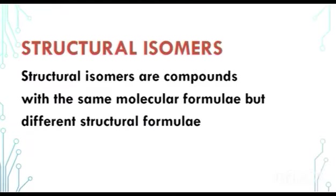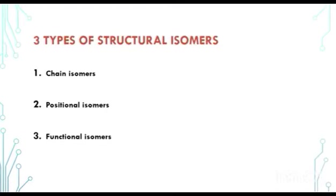What are structural isomers? Structural isomers are compounds with the same molecular formulae but different structural formulae. We have three types of structural isomers, and they are chain isomers, positional isomers, and functional isomers.